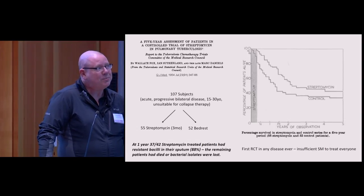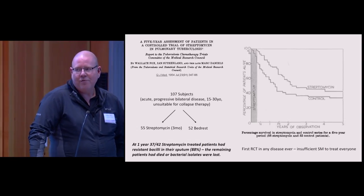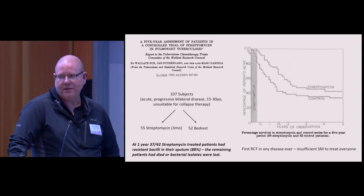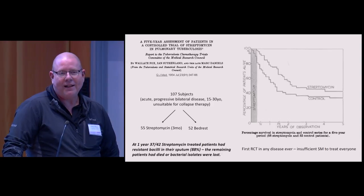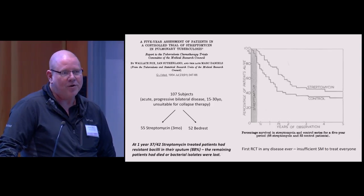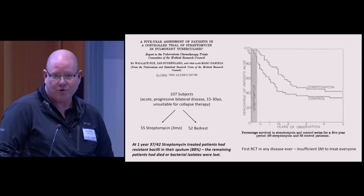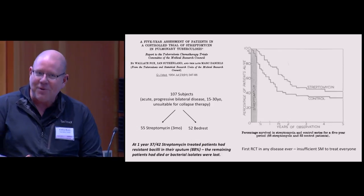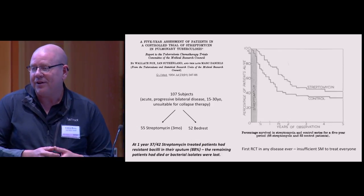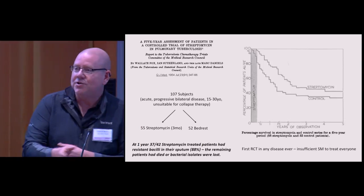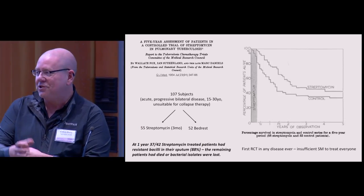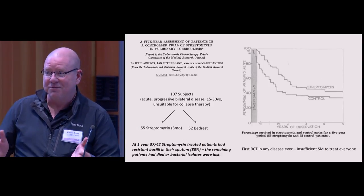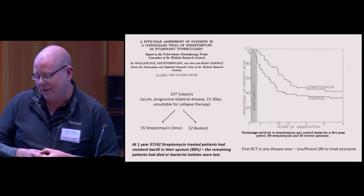The y-axis is percentage of people who are still alive. 40% of the control group were still alive two years after they were enrolled in this study. This is widely credited as a milestone in modern medicine because it's the first ever published randomized controlled trial. They only had a certain amount of streptomycin, so they wanted to give patients equal chance to get streptomycin or not.